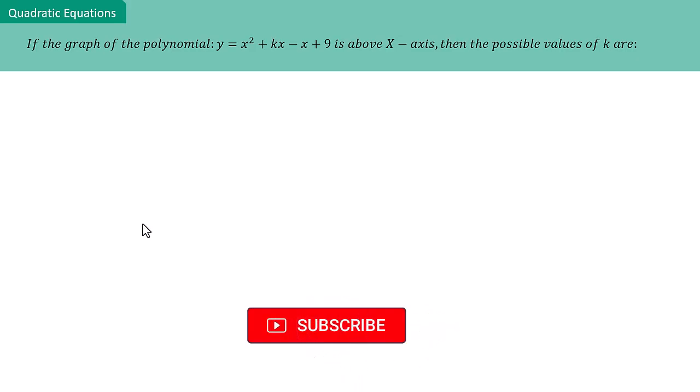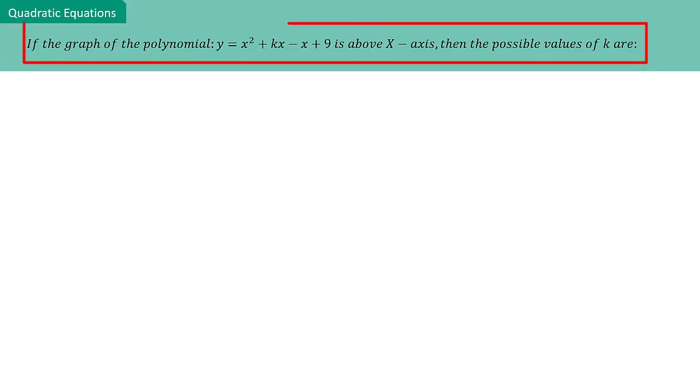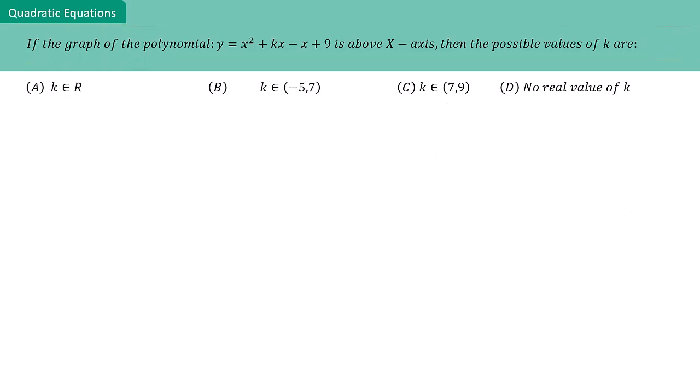The question is: if the graph of the polynomial y = x² + kx - x + 9 is above the x-axis, what are the possible values of k? We have four options to choose from, but we need to determine the correct one.